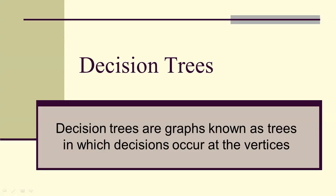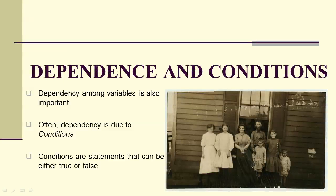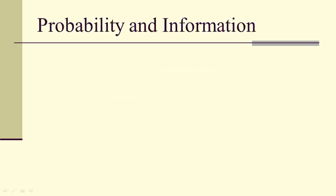Decision trees are graphs — they're actually networks known as trees — in which decisions occur at the vertices. We're going to start with dependents and conditions. We've looked at what it means for variables to be independent, but what does it mean for them to be dependent?